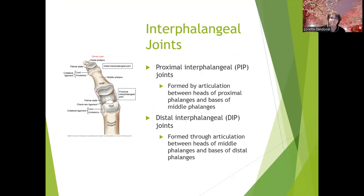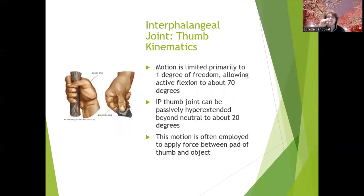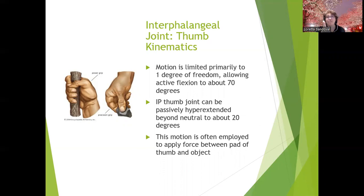The interphalangeal joints are formed between the heads of the proximal phalanges and the bases of the middle phalanges for the proximal interphalangeal joints. For the distal interphalangeal joints, it's the head of the middle phalanges and the bases of the distal phalanges. They do flexion and extension in the sagittal plane. The interphalangeal joint of the thumb has primarily one degree of freedom — about 70 degrees of active flexion — but it can be passively hyperextended beyond neutral about 20 degrees.